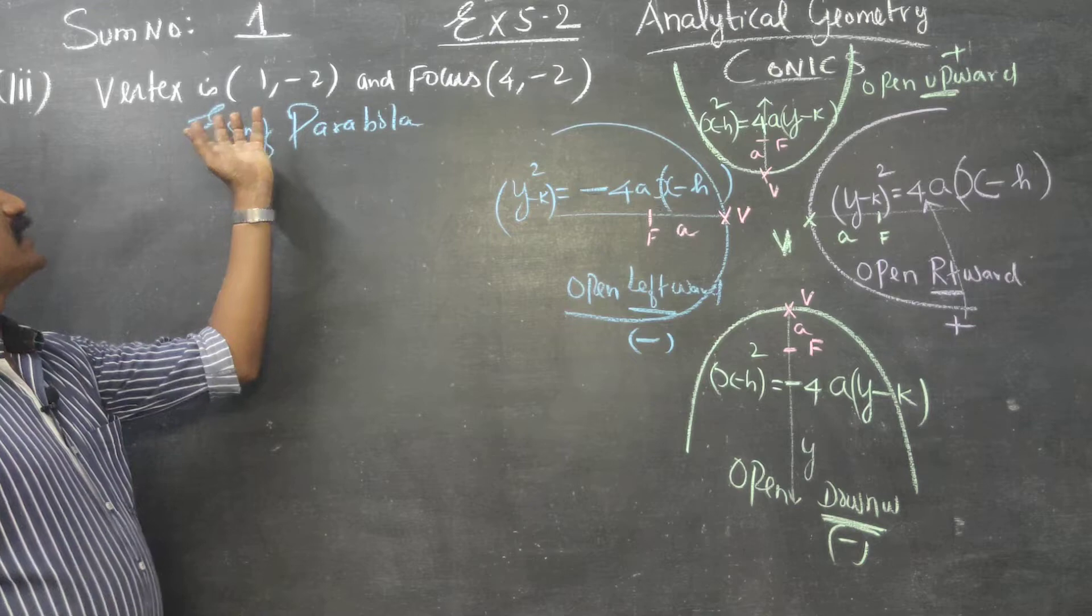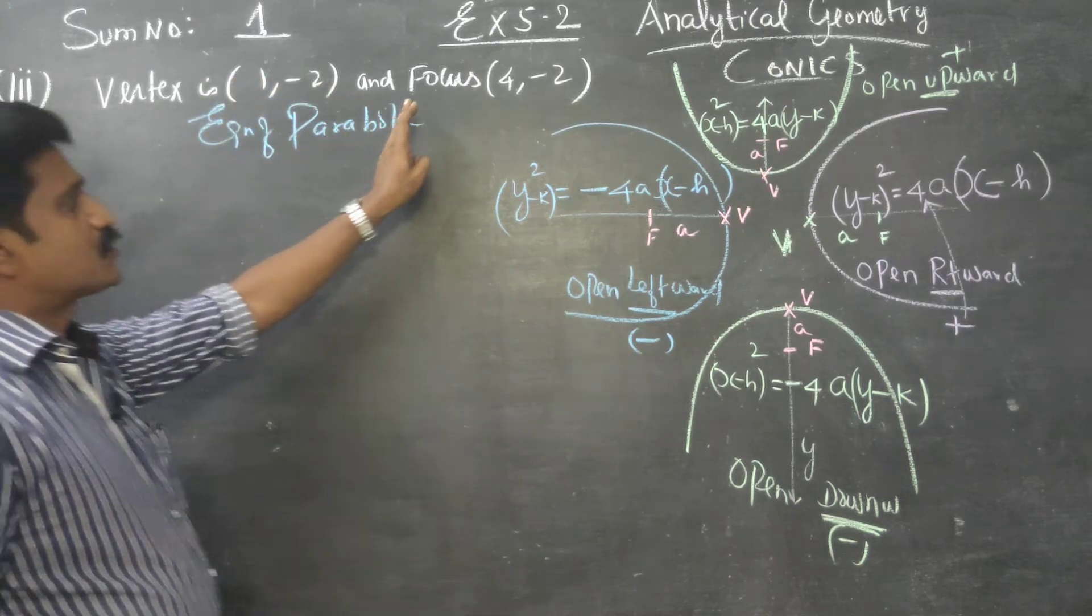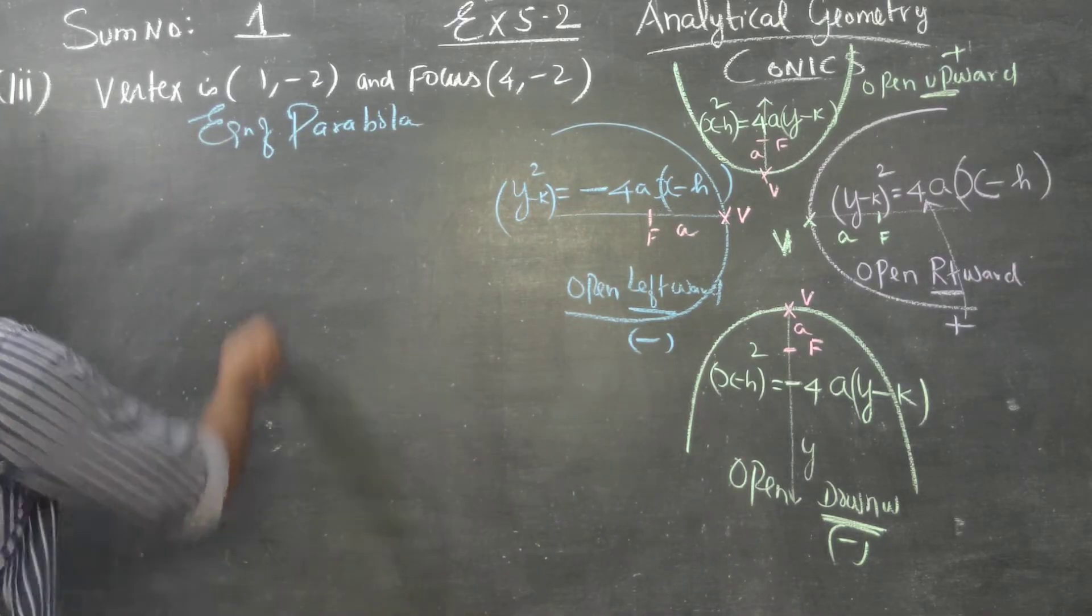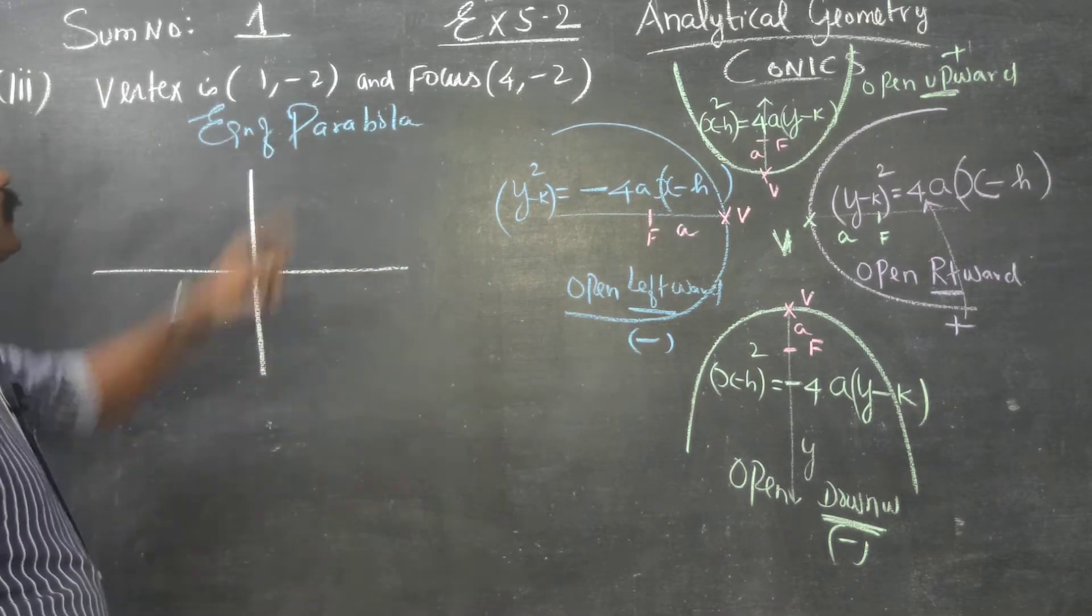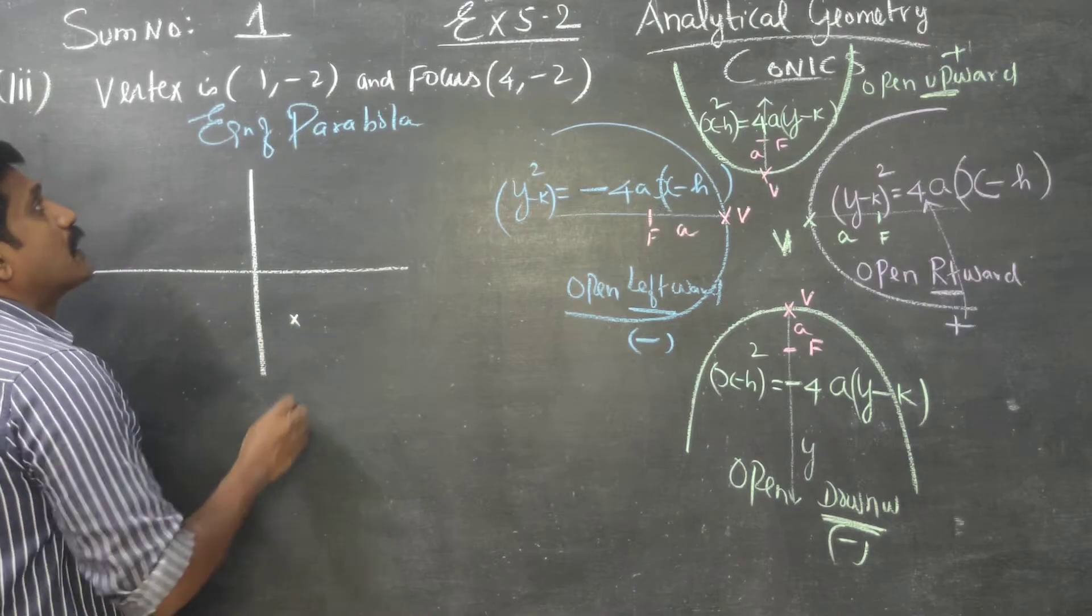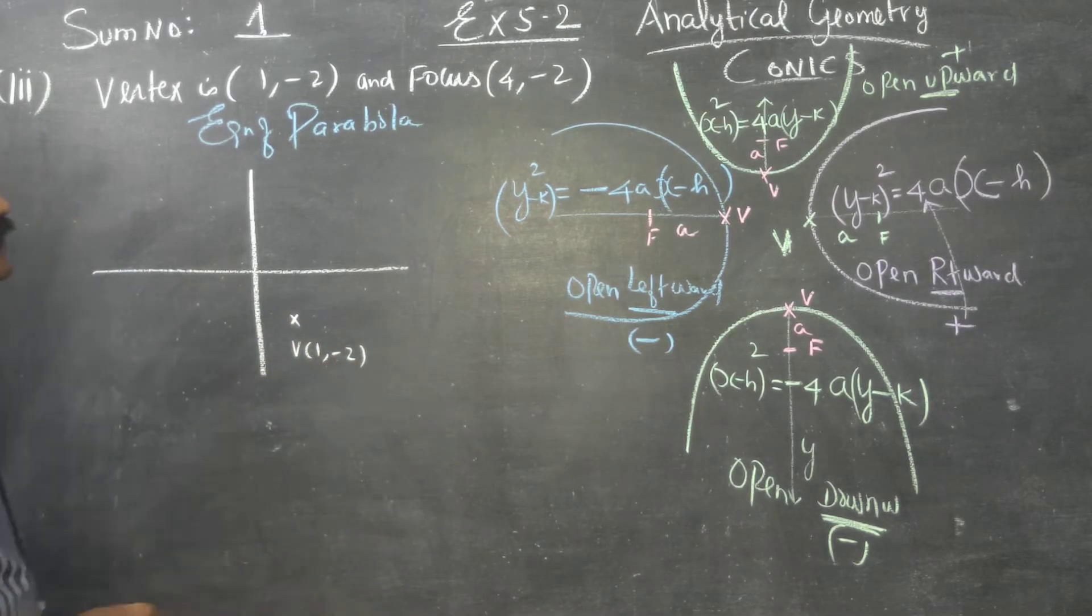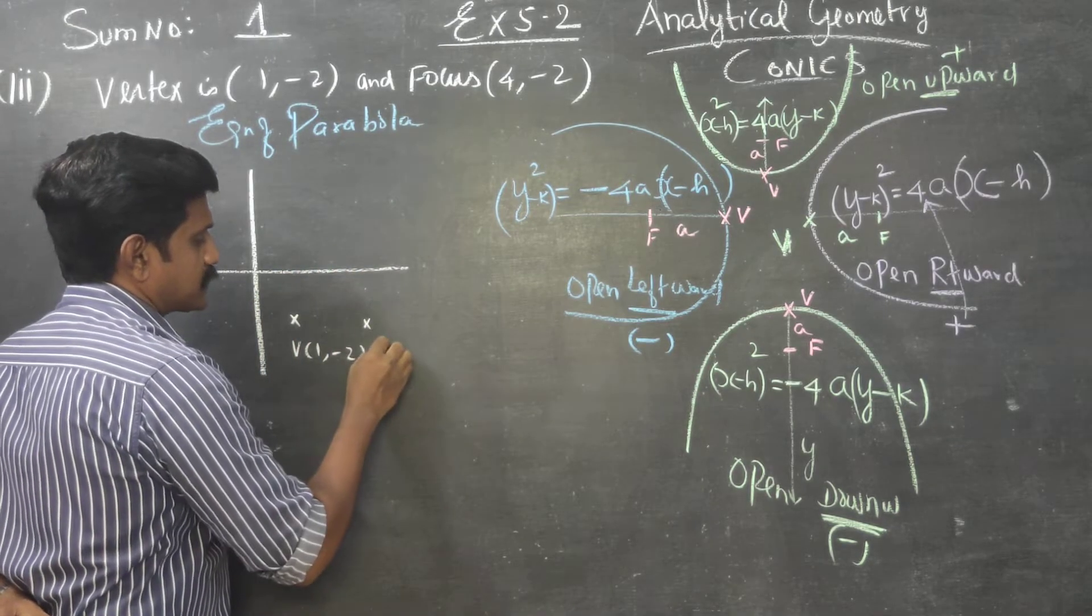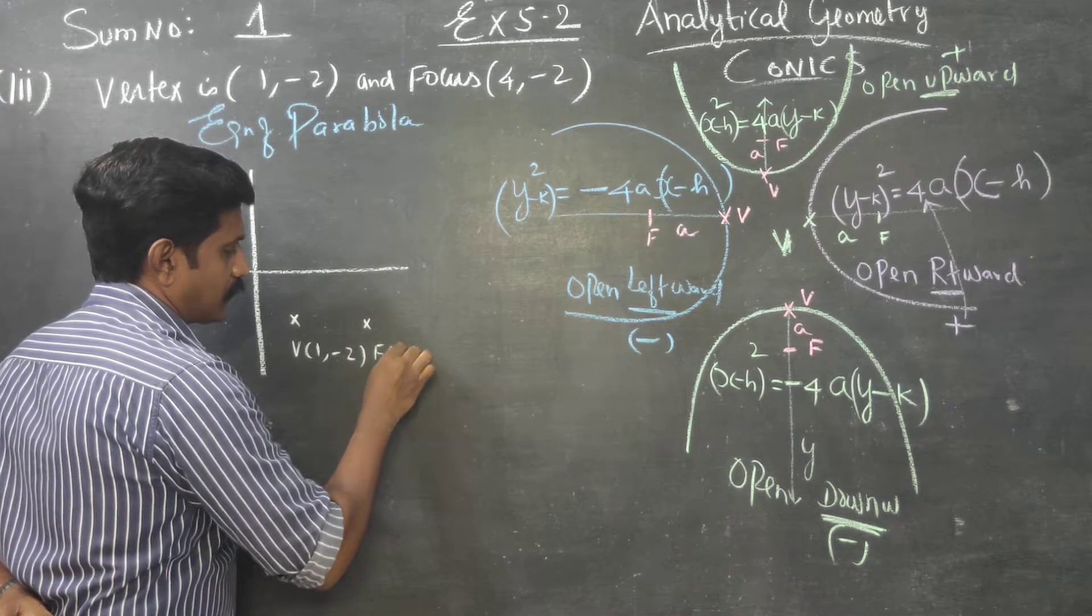First of all, we will draw a systematic diagram. Vertex is (1, -2) and focus is (4, -2). This is my x-axis and this is my y-axis. Vertex is (1, -2), and focus is at 4, -2.